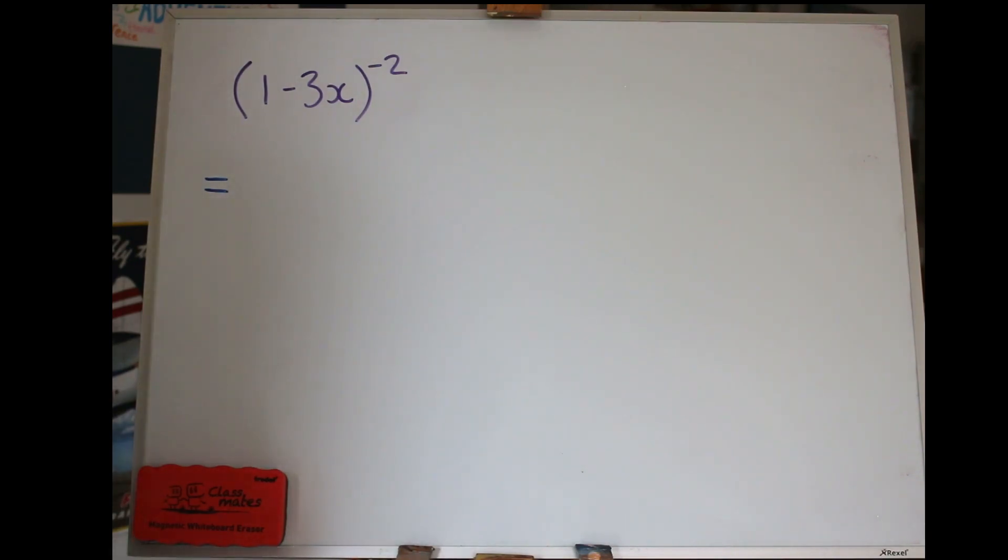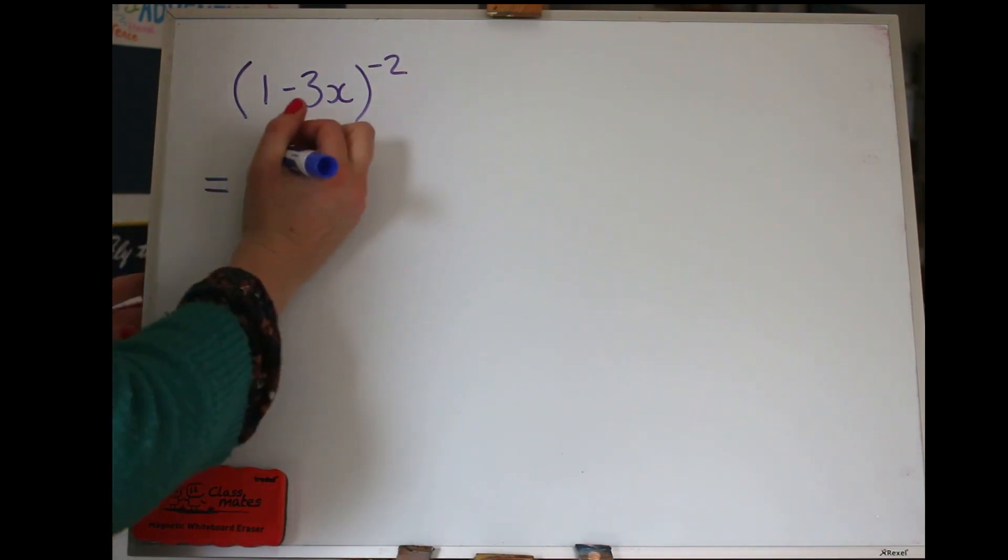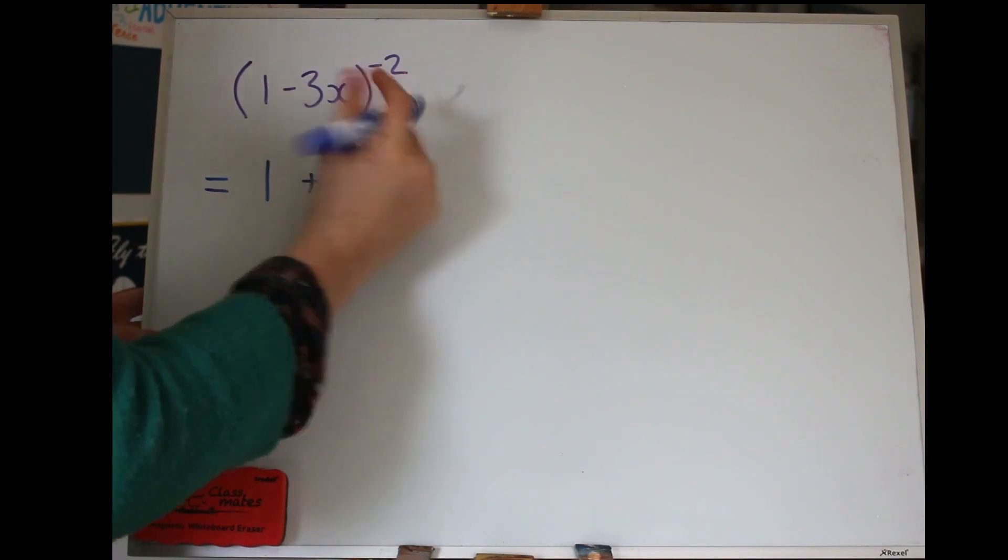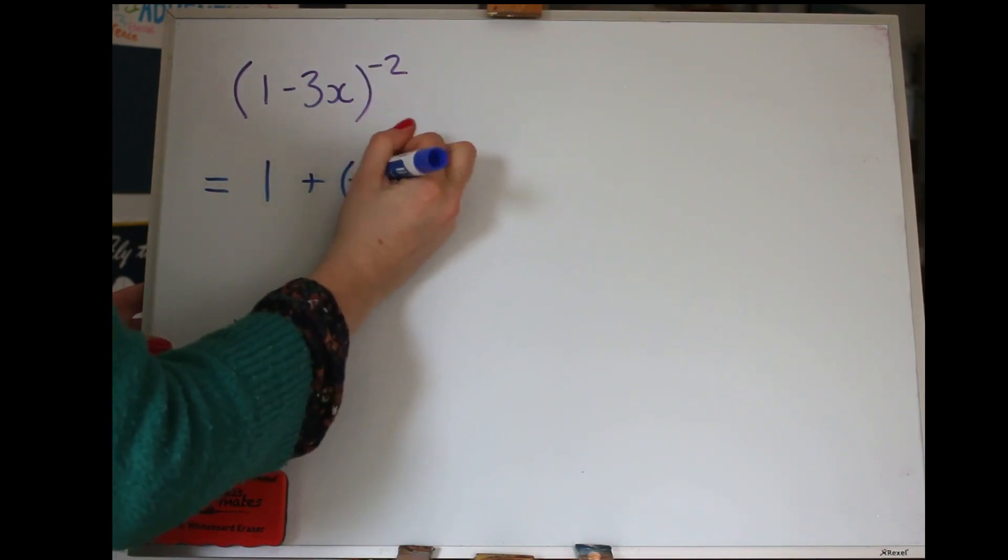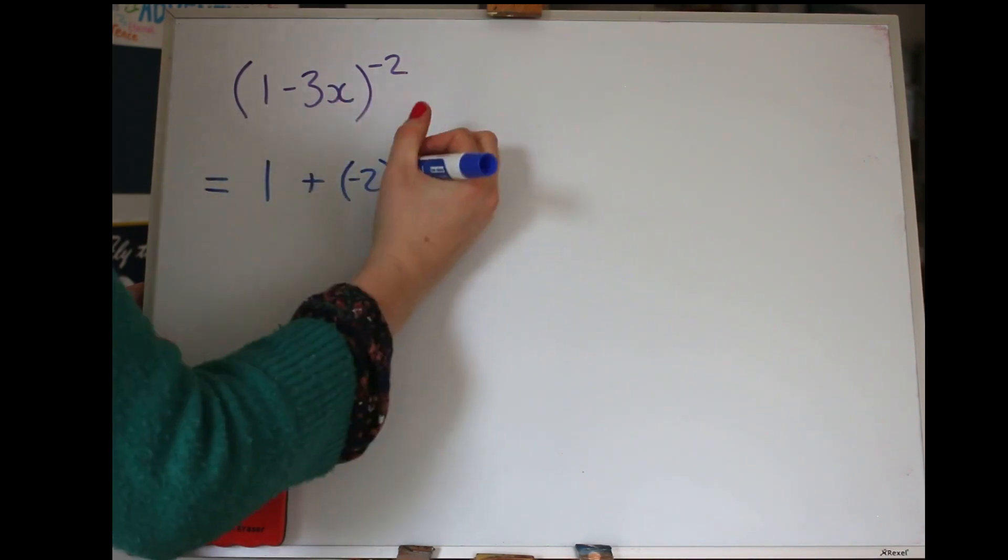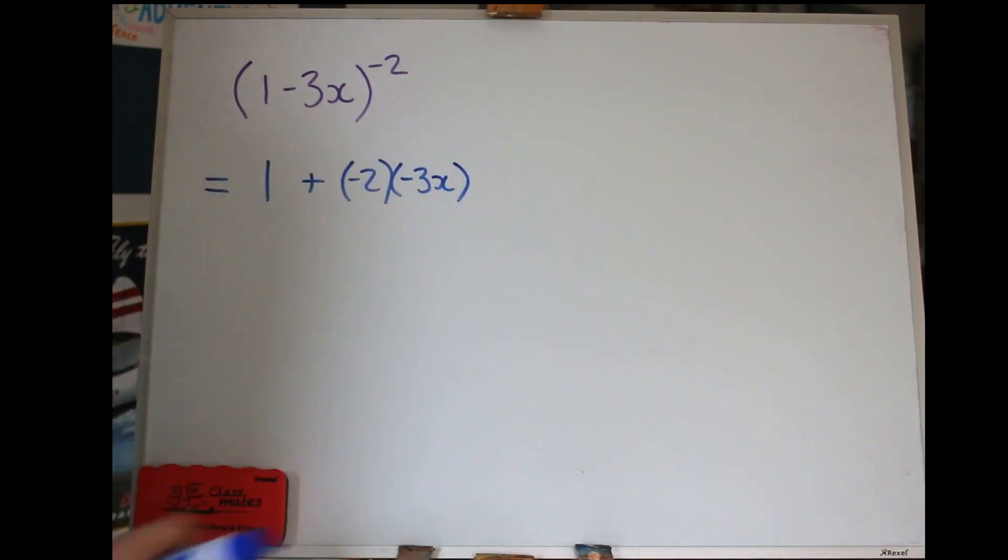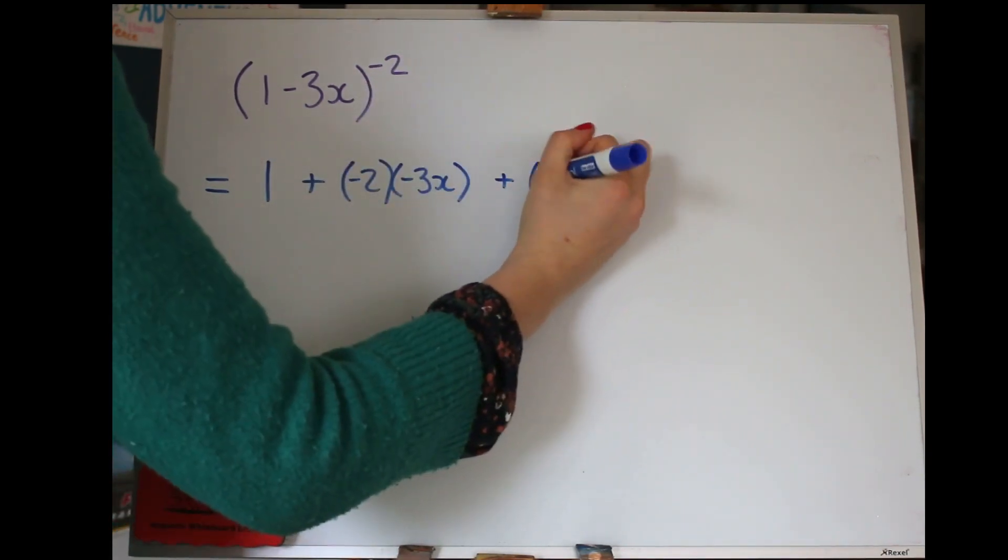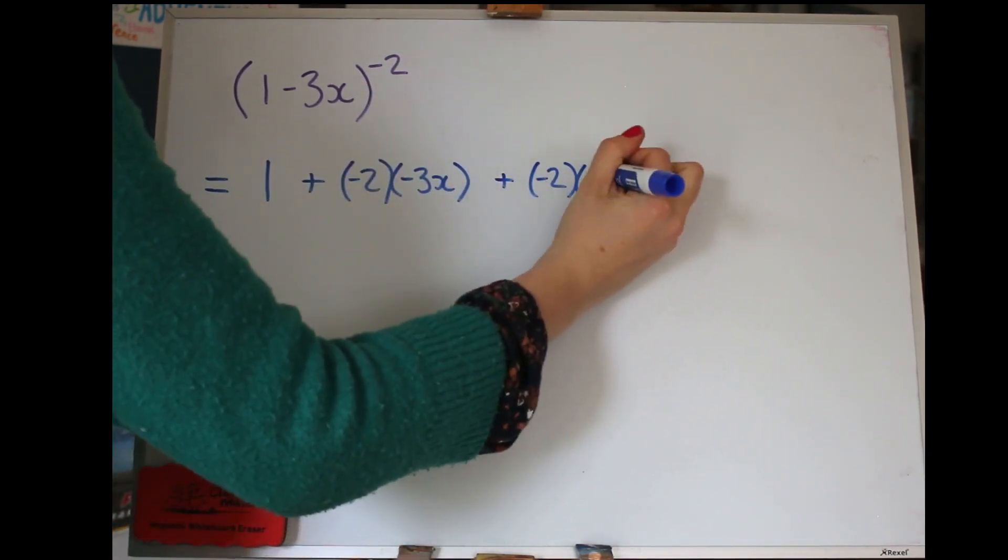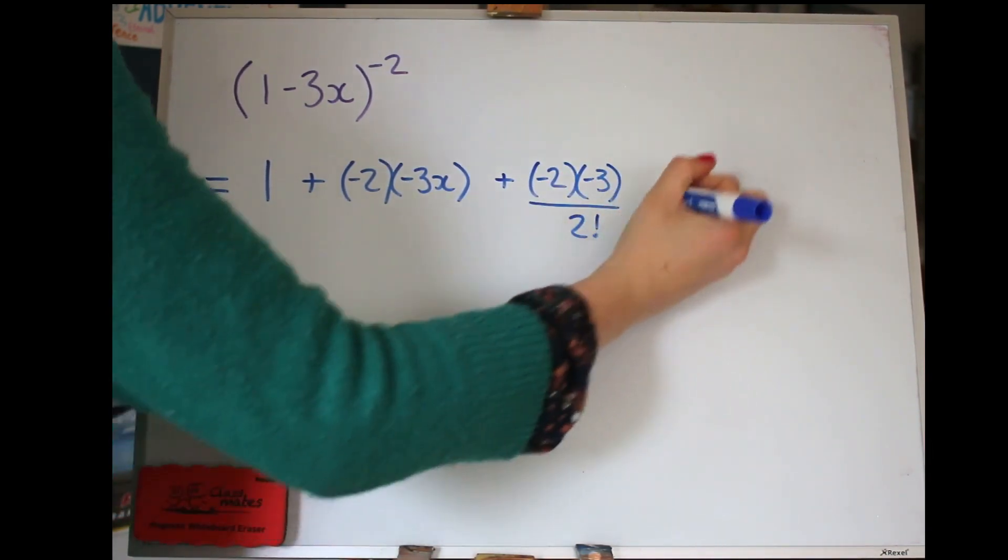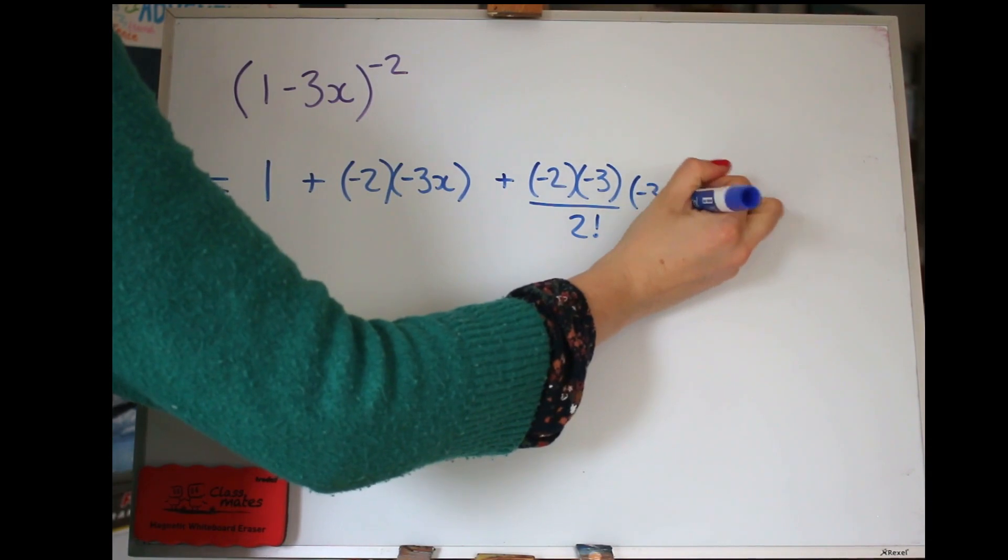So hopefully you've got that formula written down. If not, rewind and get that back. The first term was 1. The next term was N times X, so we're going to use that minus 2 as our N, and the X is the bit after the 1, so minus 3X. The third term, we're doing N times N minus 1, so that will be minus 3, dividing by 2 factorial, and then we've got our minus 3X bit all squared.